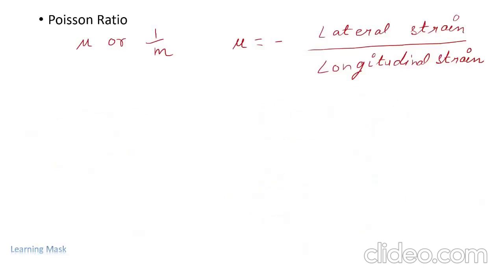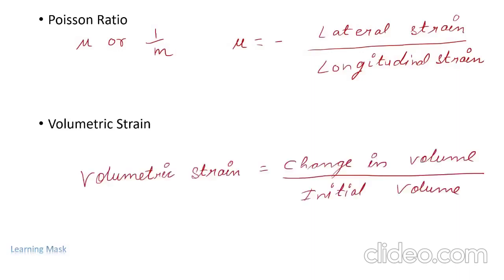Now we will define volumetric strain. It is the ratio of change in volume to initial volume — that is, change in volume divided by initial volume.